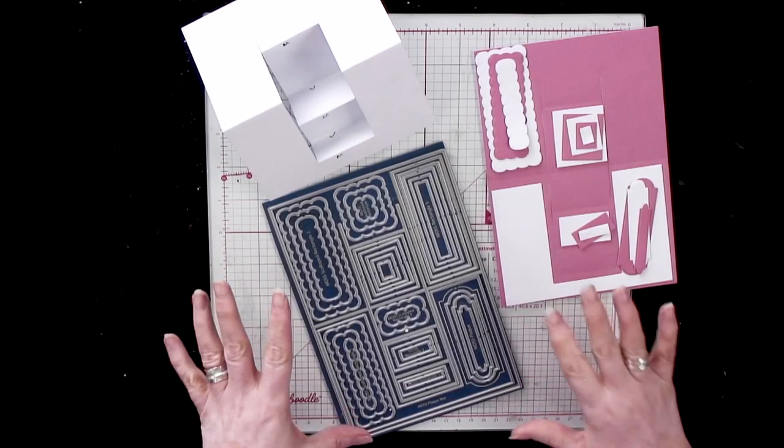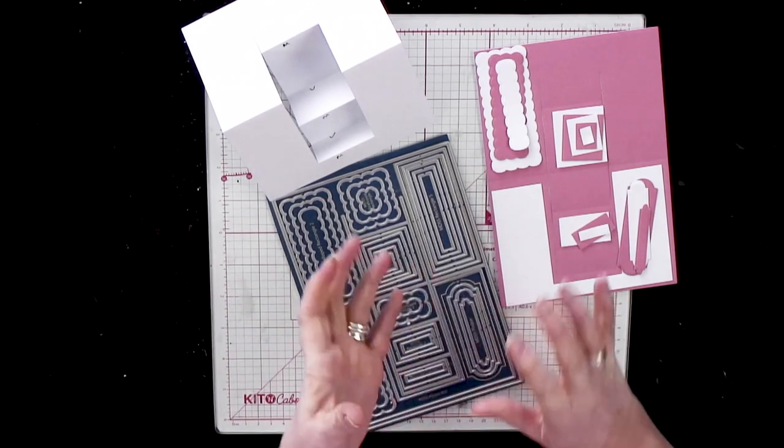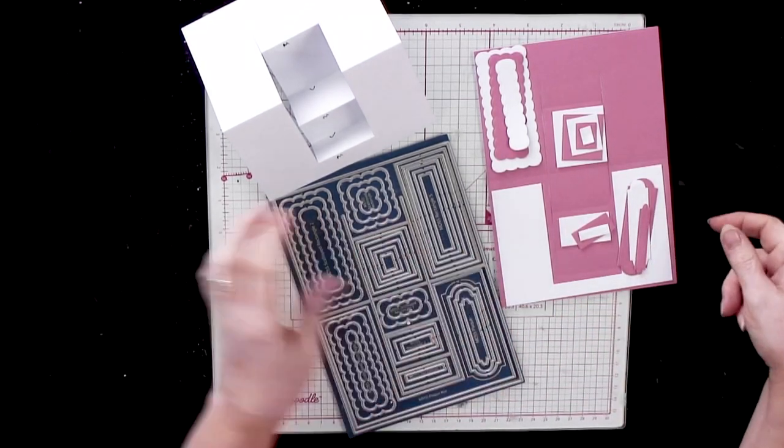So here we are with a double side stepper tutorial. It's really going over how to fold the card blank and what all the elements look like.